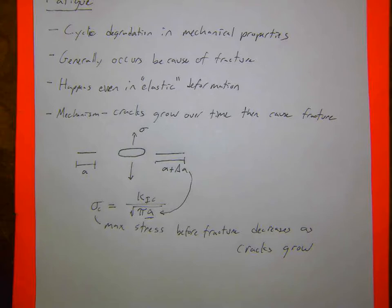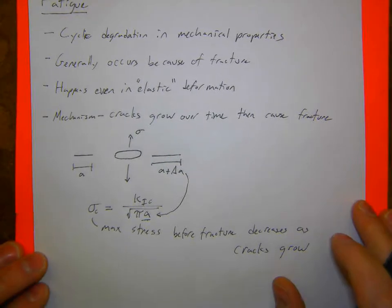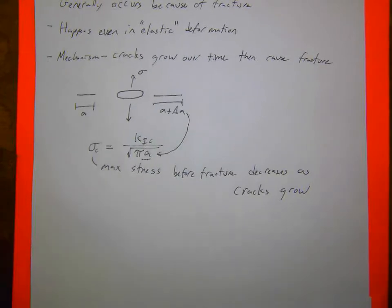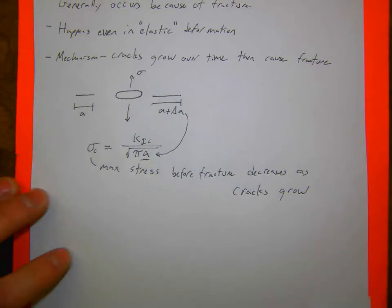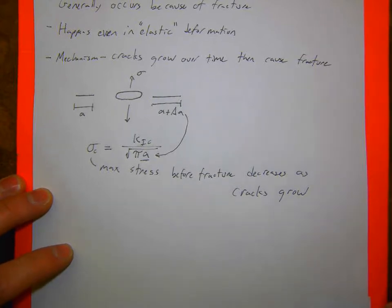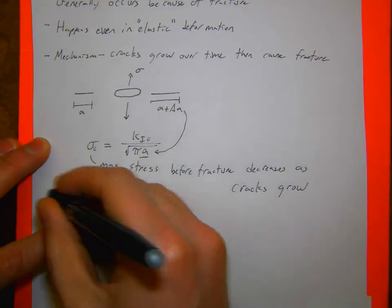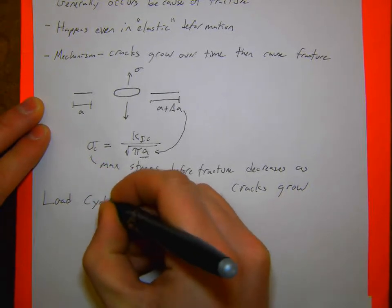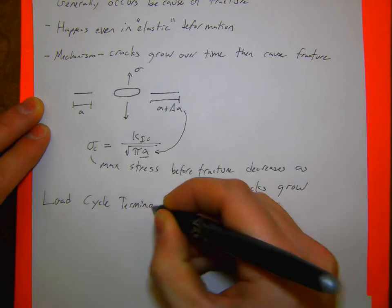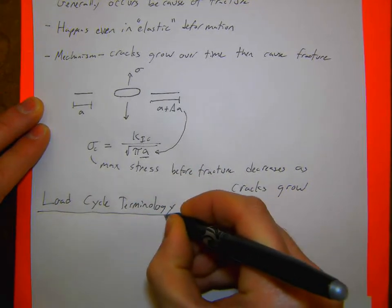With every cycle, this A is growing. So the max stress before fracture decreases as cracks grow. This is mechanistically what's happening. If you ever see a part now, an engineering bolt or something that has a smooth kind of wavy surface and then a rough broken surface, that is a fatigue problem. Even though the bolt may have been initially strong enough in your design, over time, the cycles applied to it would have caused it to fracture. From an engineering standpoint, what do we think about, how do we actually quantify this degradation and mechanical properties?